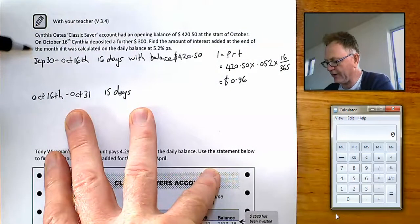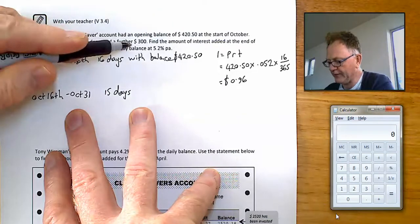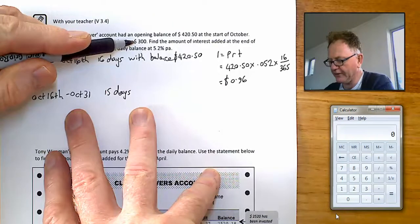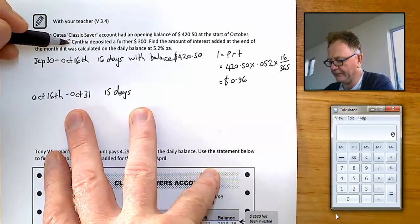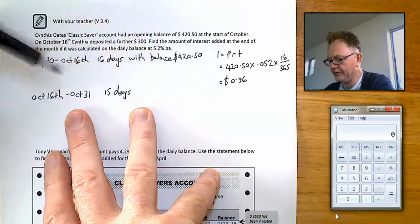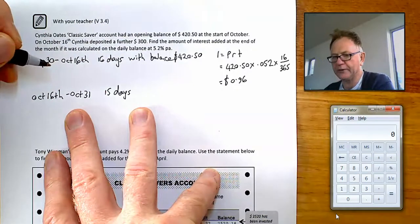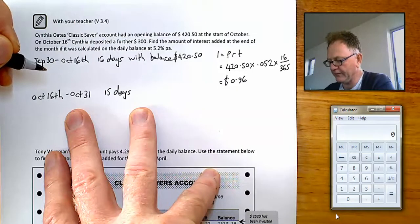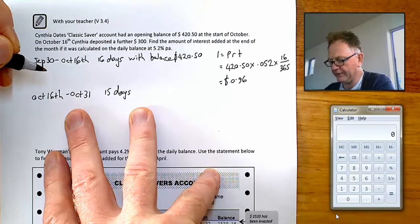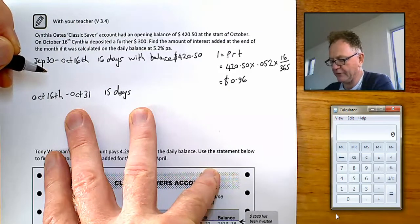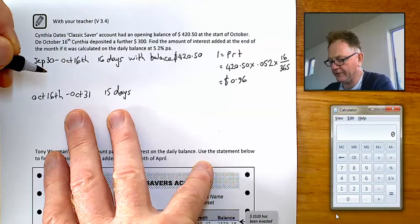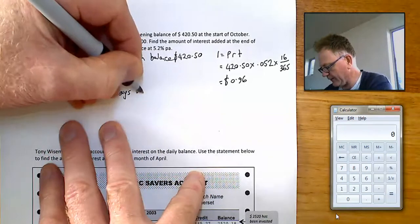The amount did change because she put in another $300 here on the 16th. So $300 added on to that $420 that's already in there will give you $720.50. And that was in there for those last 15 days until the end of October, or 15 days with a balance.